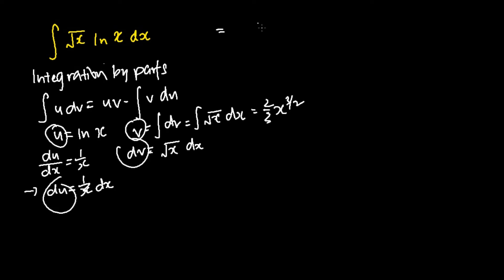The next step answer would be as follows: my u is ln x, my v is 2 over 3 x to the power 3 over 2,